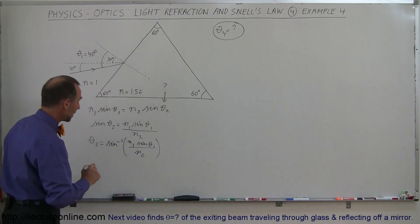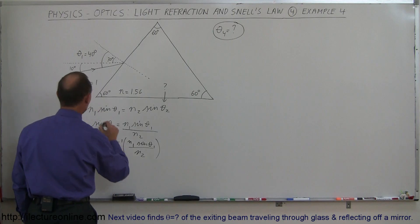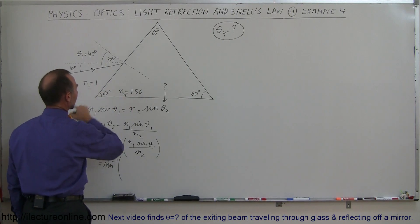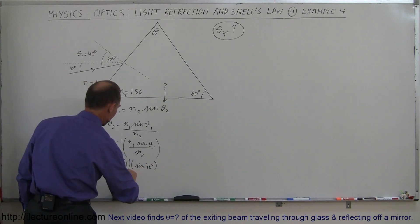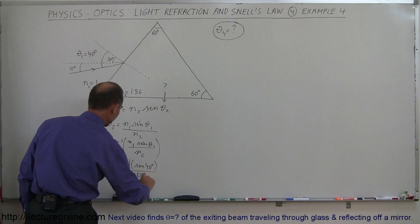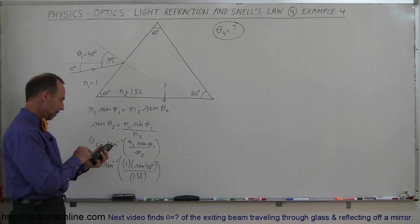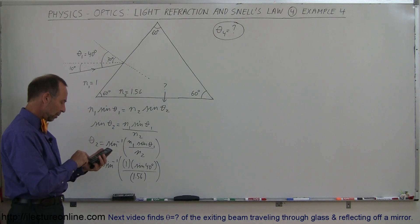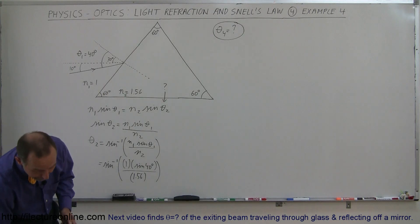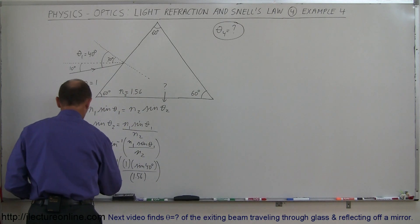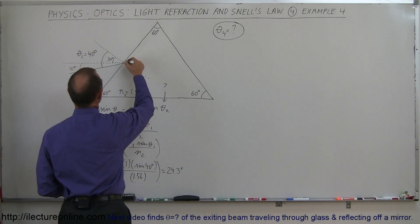Plugging in the numbers: θ₂ equals arc sine of N1, which is 1, times the sine of θ₁ which is sine of 40 degrees, divided by N2 which is 1.56. So we take sine of 40 degrees, divide by 1.56, and we get 0.41. Taking the arc sine of that gives us 24.3 degrees. So θ₂ equals 24.3 degrees — that's the refracted angle at the first boundary.